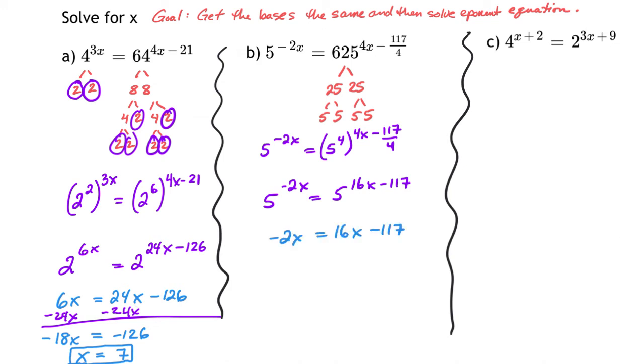Now my fives are the same. Once they're the same, I focus on the exponents. They have to be the same, so negative 2x equals 16x minus 117.